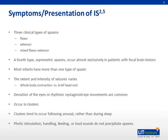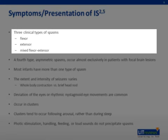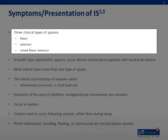Symptoms and presentation. There are three types of spasms. The first, termed flexor spasm, consists of a sudden flexion of the neck, trunk, arms, and legs, and contraction of the abdominal muscles. This contraction may be severe enough to cause the torso to jackknife at the waist. The second type, extensor spasms, consists of abrupt extension of the neck and trunk with abduction or adduction of the arms and legs. The third type, mixed flexor-extensor spasm, usually consists of flexion of the neck, trunk, and arms, and extension of the legs. Less commonly, they involve flexion of the legs and extension of the arms.